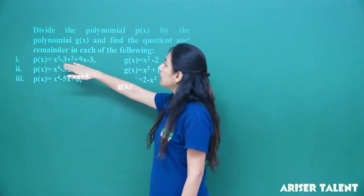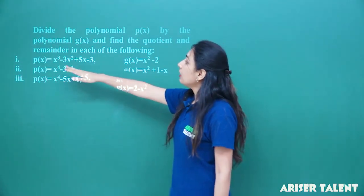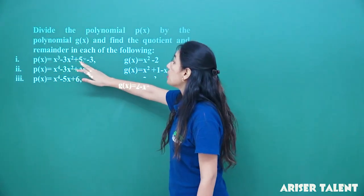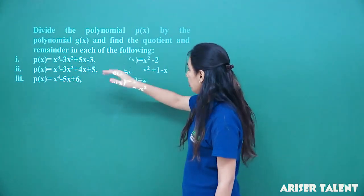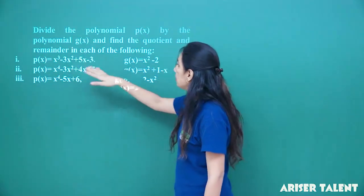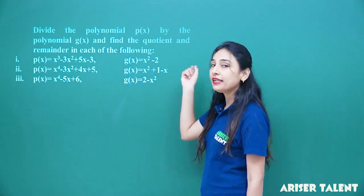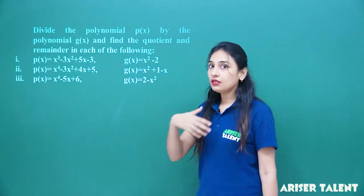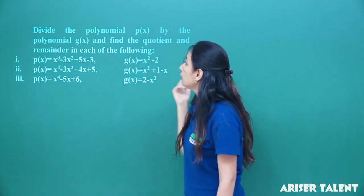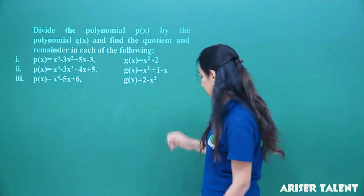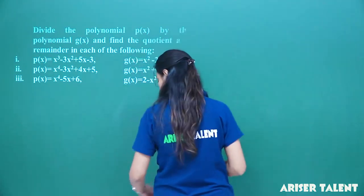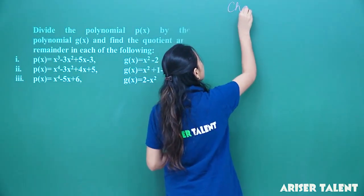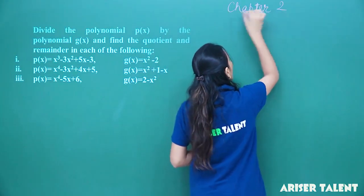We have done the first question: p(x) equals x cubed minus 3x squared plus 5x minus 3. We had to divide this by x squared minus 2 and find the quotient and remainder. Now for the second one, again, we have to find the quotient and remainder. Let us start our chapter — Chapter 2: Polynomial.